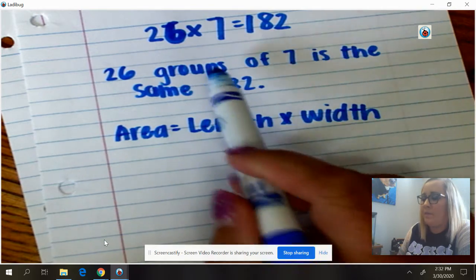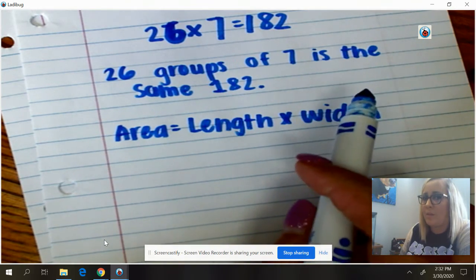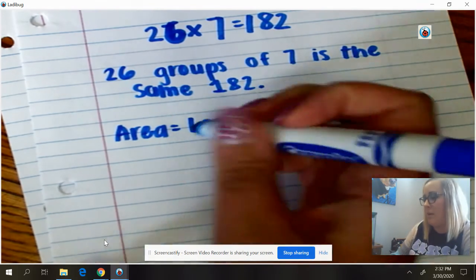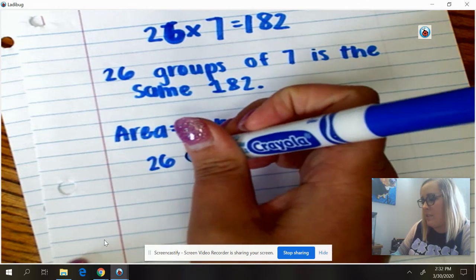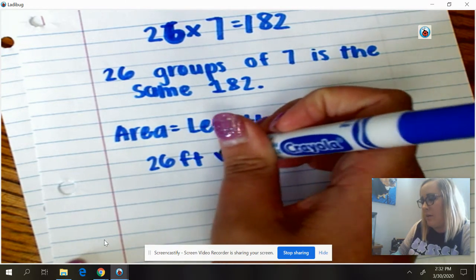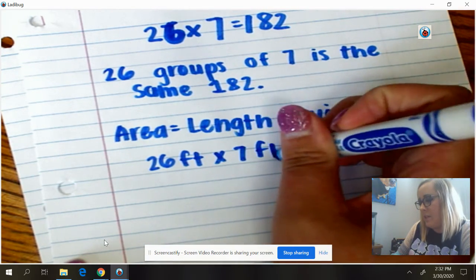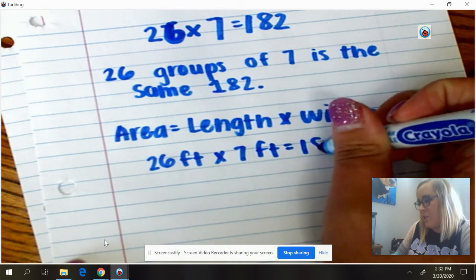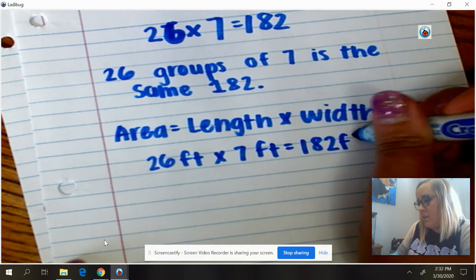Now I'm thinking about, if I use this area model, I need to remember that I need a label for those. So it might be 26 feet by 7 feet equals 182 feet squared.